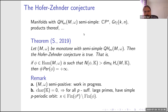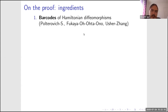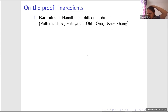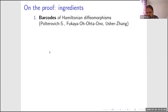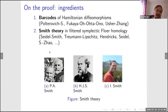The proof has two ingredients. One is barcodes of Hamiltonian diffeomorphisms, introduced in symplectic topology in work of Polterovich and me, and also in a paper of Asaurs-Junk, but it has previous incarnations in work of Fukaya–Oh–Ohta–Ono and also in work of Usher on the concept of boundary depth.